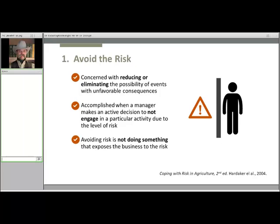Risk avoidance is concerned with reducing or eliminating the possibility of events with unfavorable consequences. With foresight and the adoption of preventative measures, many situations can and probably should be avoided. When considering both the risk and the possible preventative measures to take, the process should include both familiar and unfamiliar sources of risk. Avoiding the risk is accomplished when a manager takes an active decision to not engage in a particular practice or activity due to the level of risk that might be involved.